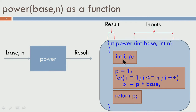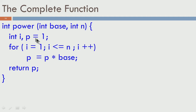Looking at the complete function — int power(int base, int n) with 'int i, p; p = 1; for loop; return p;' — from this I know it expects two integer inputs and gives one integer output, which is p after the calculations. A key benefit: since p equals 1 is initialized inside the function, every time this function is called, p gets initialized to 1 automatically. You do not have to remember to initialize p every time — you have delegated the task, and the subtask called power takes care of everything required to compute base power n.